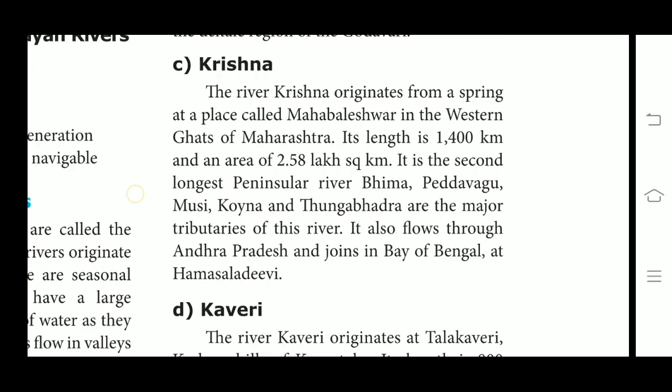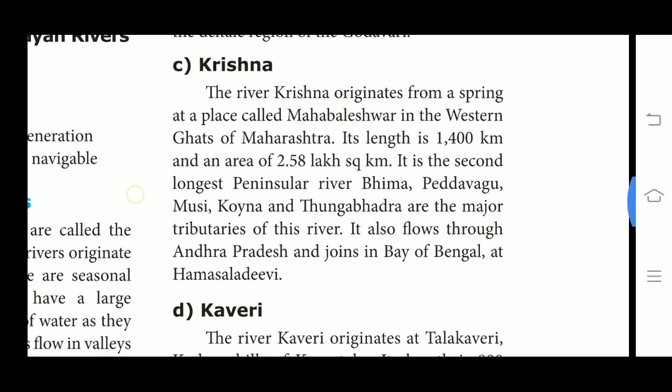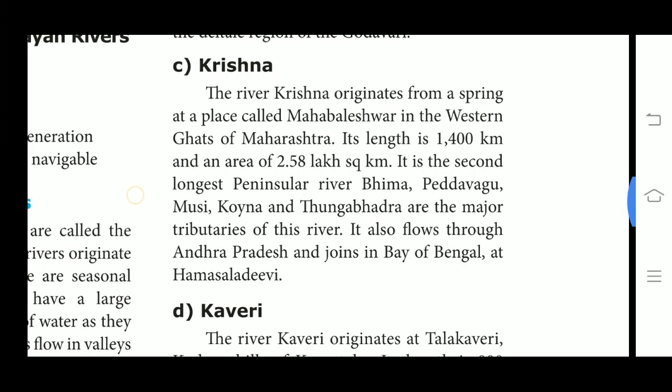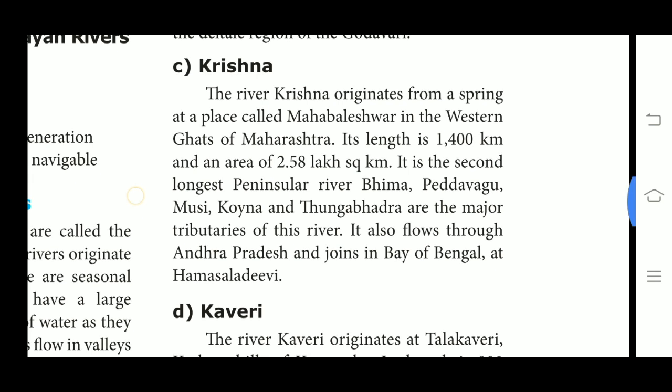Rising from Mahabaleshwar, the Krishna flows about 1,400 km and reaches the Bay of Bengal. The river is also called Krishnaveni. It is one of the major sources of irrigation for Maharashtra, Karnataka, Telangana and Andhra Pradesh. The major tributaries of river Krishna are Bhima, Vedganga, Musi, Koyna and Tungabhadra. Its flow joins the Bay of Bengal at Hamasaladeevi.